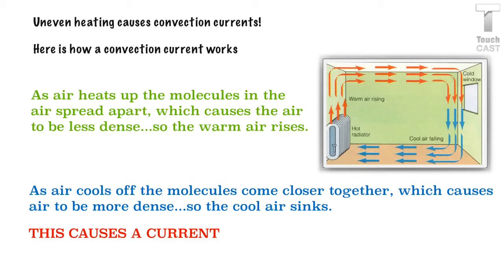It's because of this uneven heating that we get convection currents. As the air heats up, the molecules in the air spread apart, which causes the air to be less dense. Therefore, we end up with hot air that's rising. But as that air circulates and starts to get cooler, those molecules are going to get closer together, which causes the air to be more dense. Therefore, it sinks. So think about density and why a rock sinks and a piece of wood is going to float. And this is why we get currents.